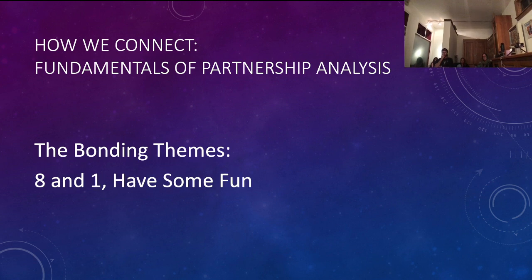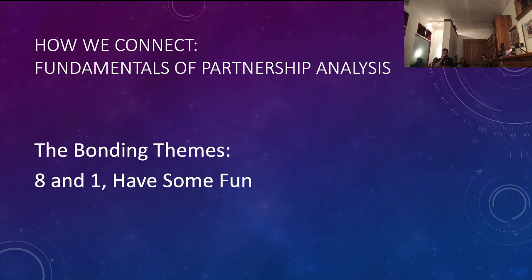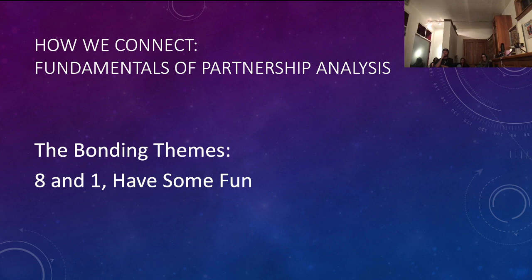Then we have eight and one — have some fun. This is what people are always looking for. You have pretty much what you need, but there's one thing missing. Now if that happens to be the solar plexus, that can be difficult. If it happens to be the sacral, that can be difficult. Ra said the three hardest, in his opinion, were the solar plexus, the sacral, and the G center. He said every relationship really needs to have those, or else it's going to have some problems. I would add the ego to that as well. And if you have eight and one with the throat missing, you're automatically split, and that can mean communication issues.